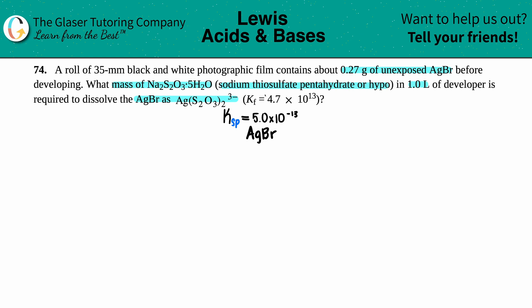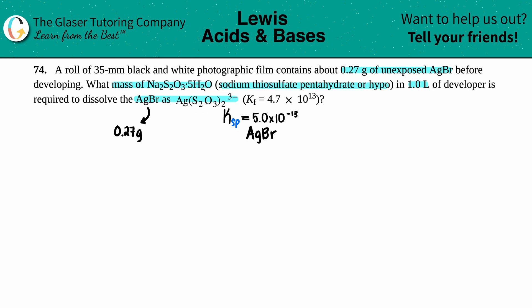We're given a mass of 0.27 grams of silver bromide, and we want to know how much mass of the hypo can dissolve that silver bromide. Keep in mind we want it dissolved as the complex ion Ag(S₂O₃)₂³⁻, because they gave us a Kf.